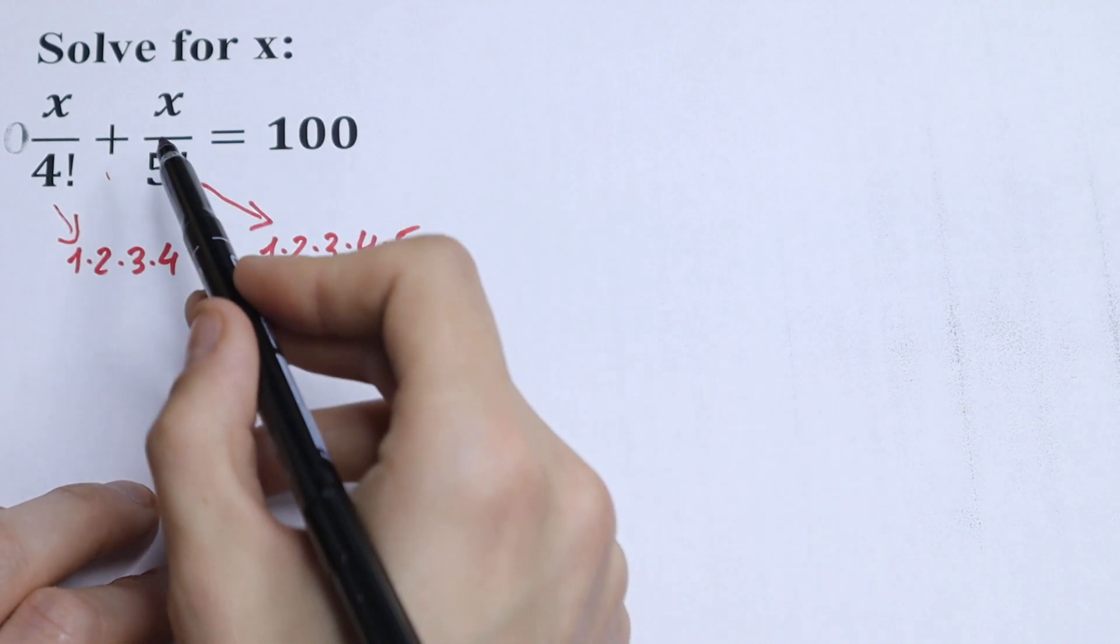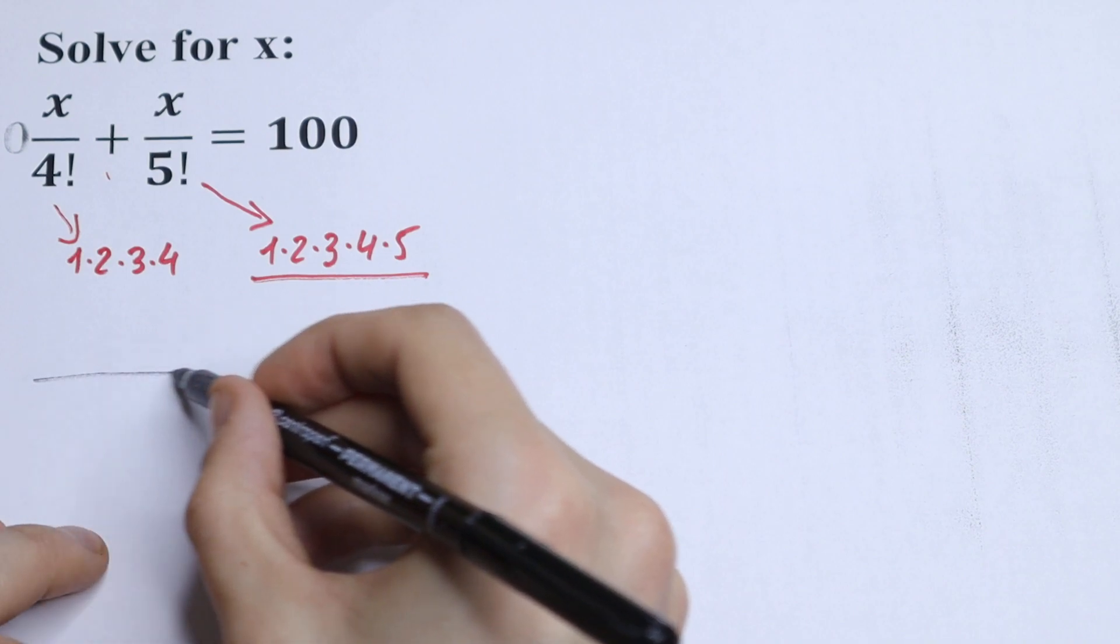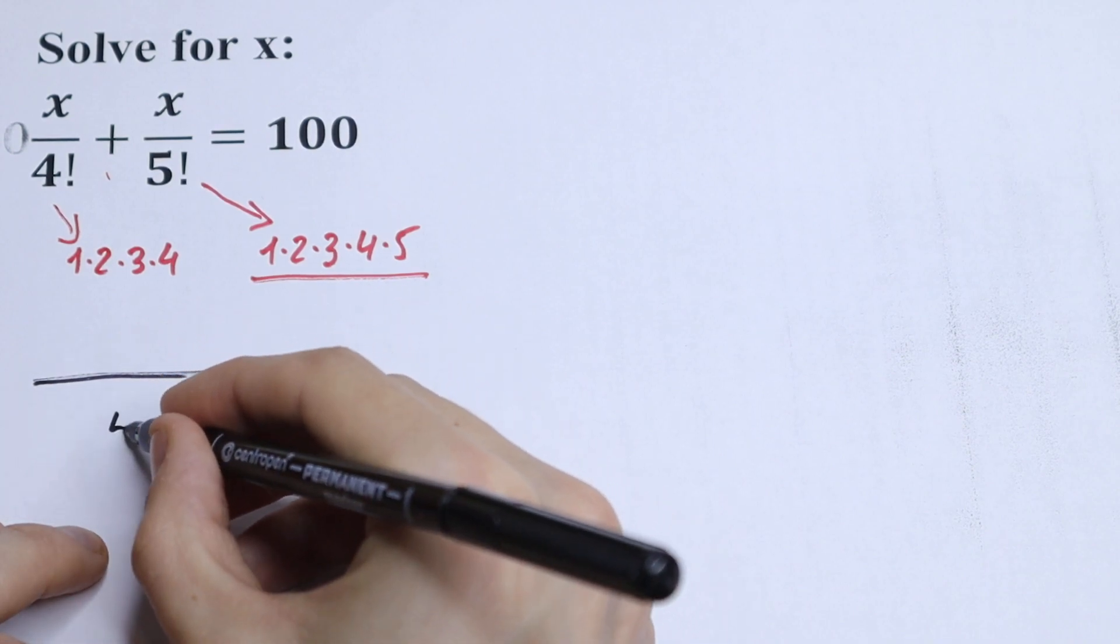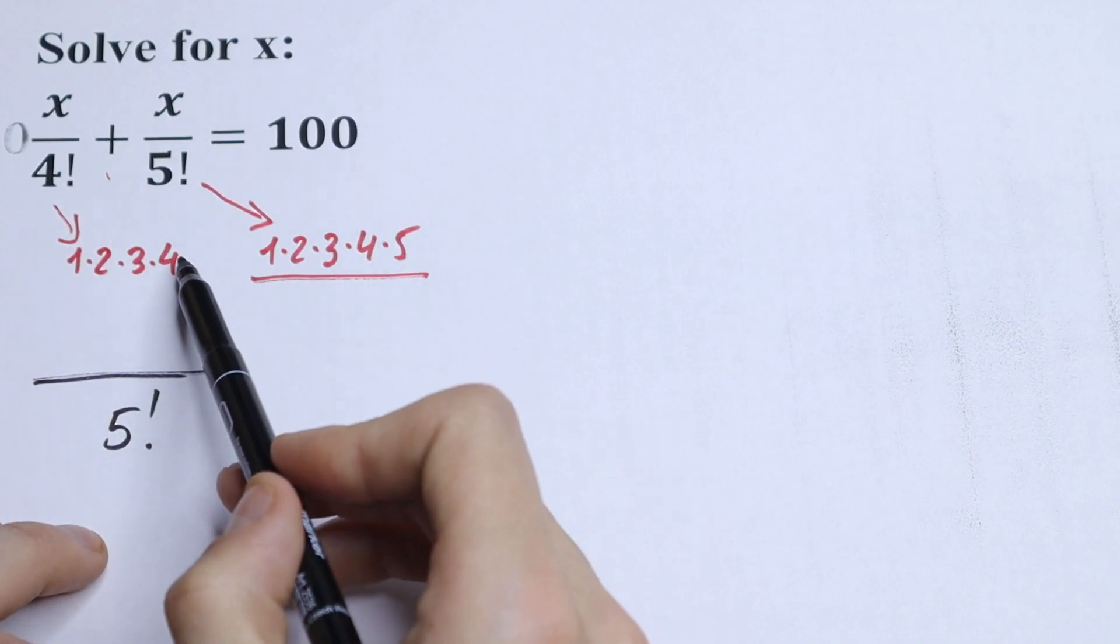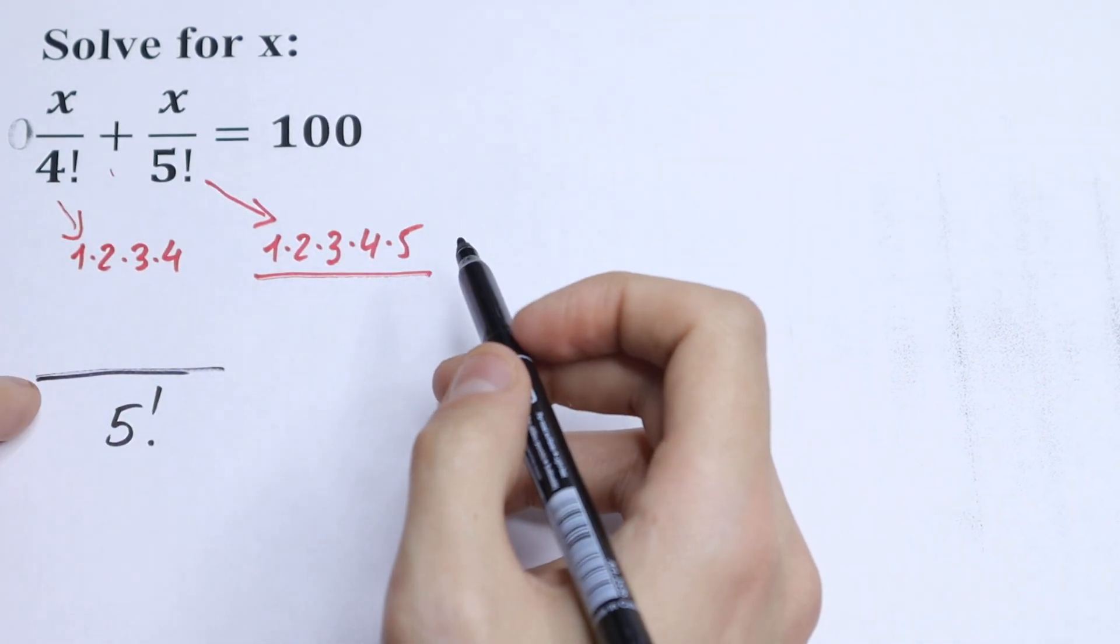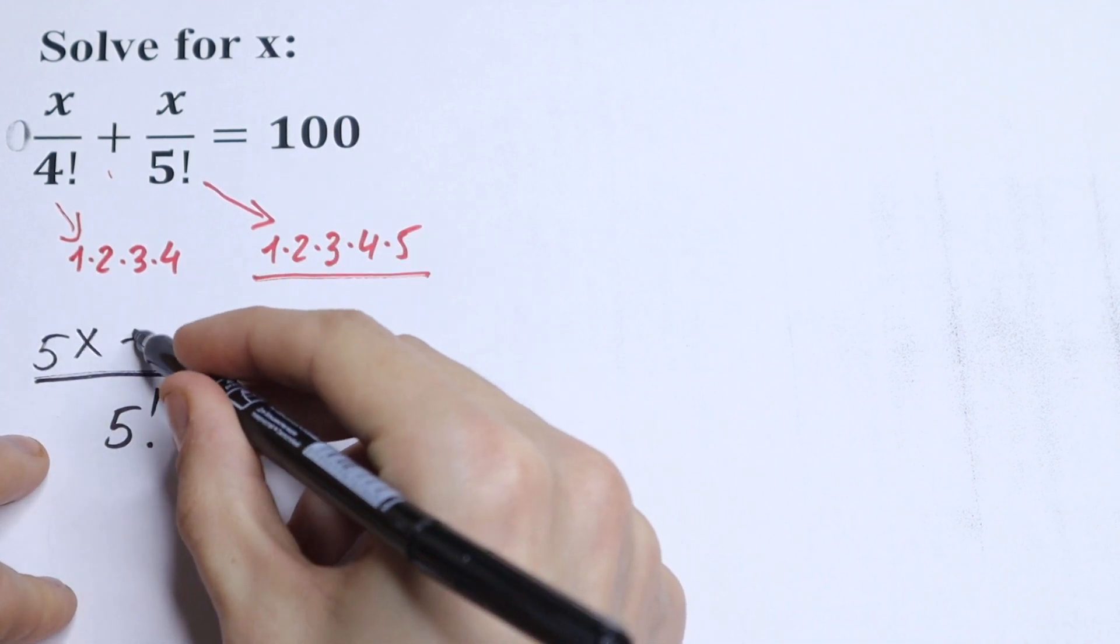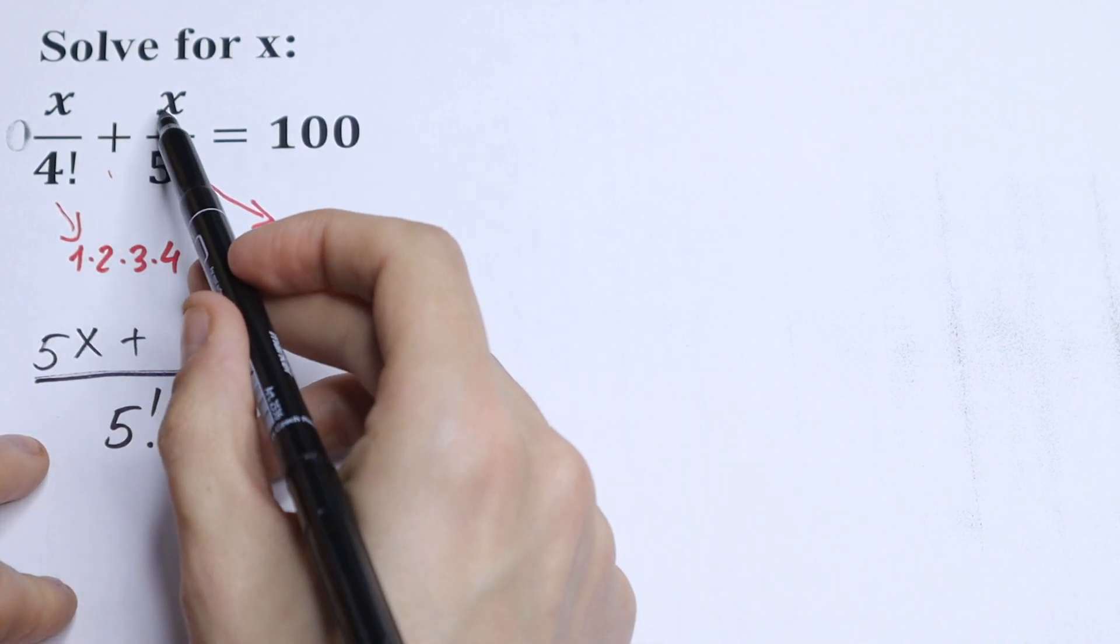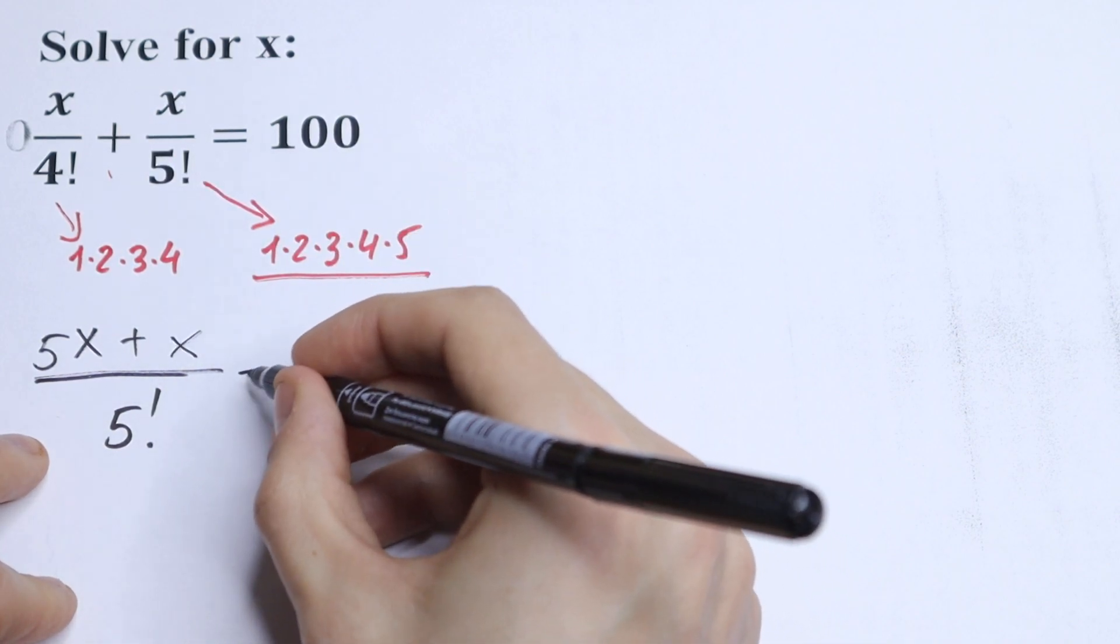So as you can see, 5 factorial will be our common denominator. We can write this using common denominator 5 factorial, and we need to multiply by 5, so we have 5x plus x equals 100.